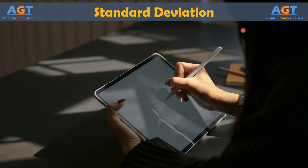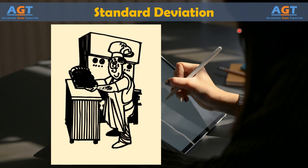One idea inherent in the Six Sigma methodology is that variance is the root of many defects. For example, if an oven heats to exactly 350 degrees in 5 minutes and stays at that temperature until it is turned off, it is less likely to burn cookies. If a cook measures each ingredient exactly, he or she is more likely to turn out cookies that consistently taste good. Add variation in the process, and consistency is lost.